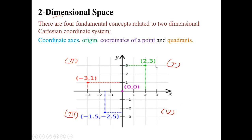For example, (2, 3) is a point's coordinates. If you take another point, it might be (-3, 1). The four quadrants are formed by the intersection of the two real number lines. The first quadrant has positive x and y, the second quadrant has negative x and positive y, the third quadrant has negative x and y, and the fourth quadrant has positive x and negative y. Given any coordinates, you can tell the position in the two-dimensional space.